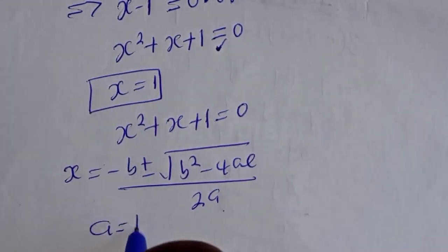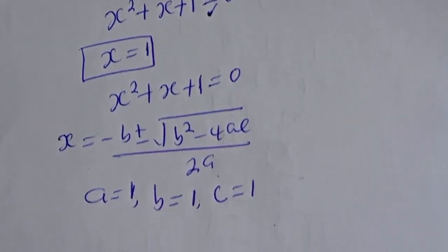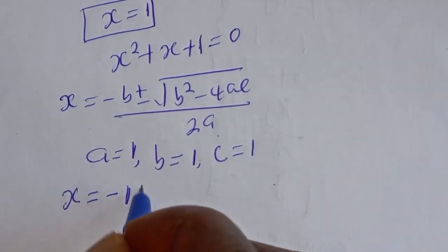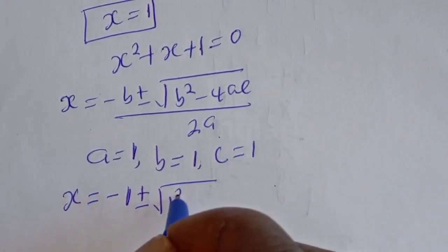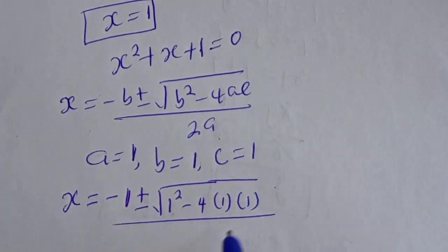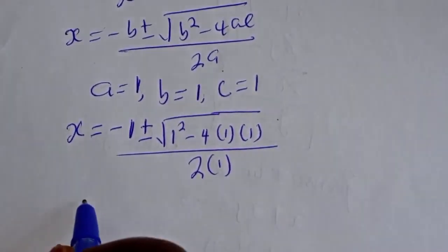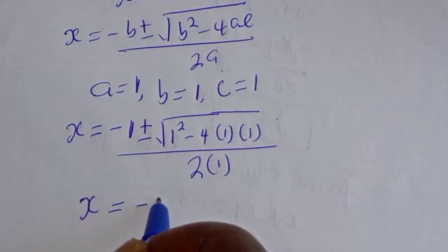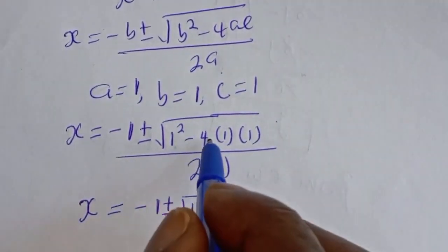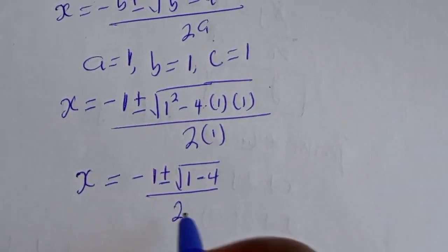A is equal to 1, B is equal to 1, C is equal to 1. Let's substitute. s is equal to minus 1 plus or minus square root of 1 squared minus 4 multiplied by 1 multiplied by 1. That gives s equal to minus 1 plus or minus square root of 1 minus 4, over 2.